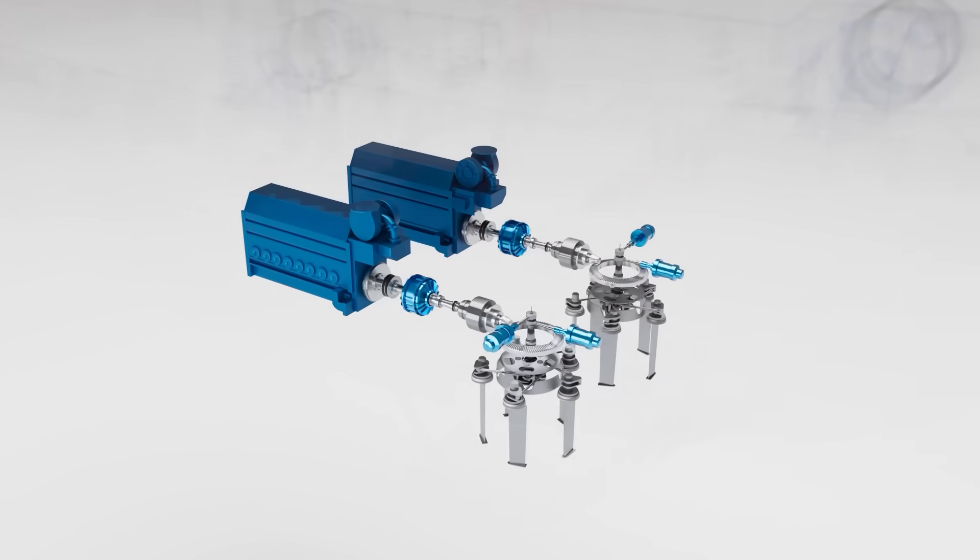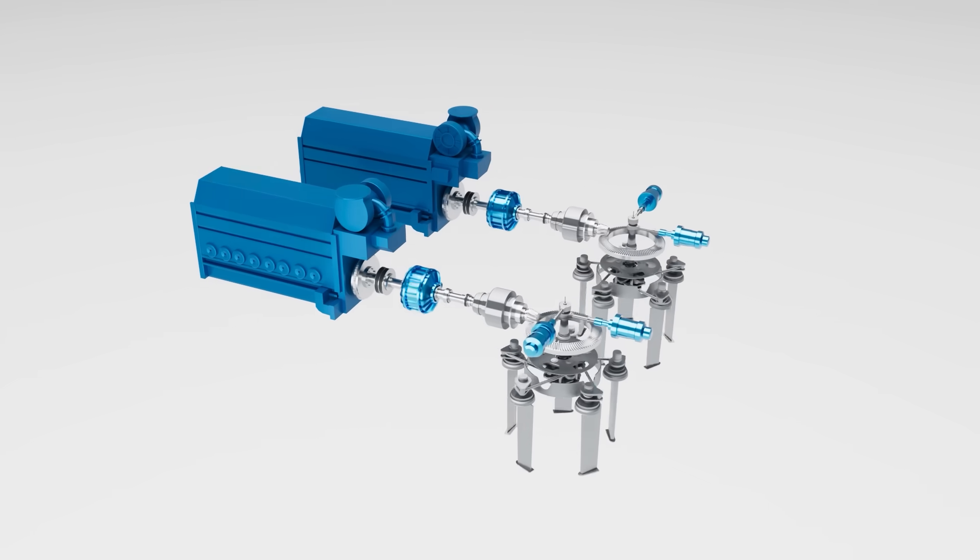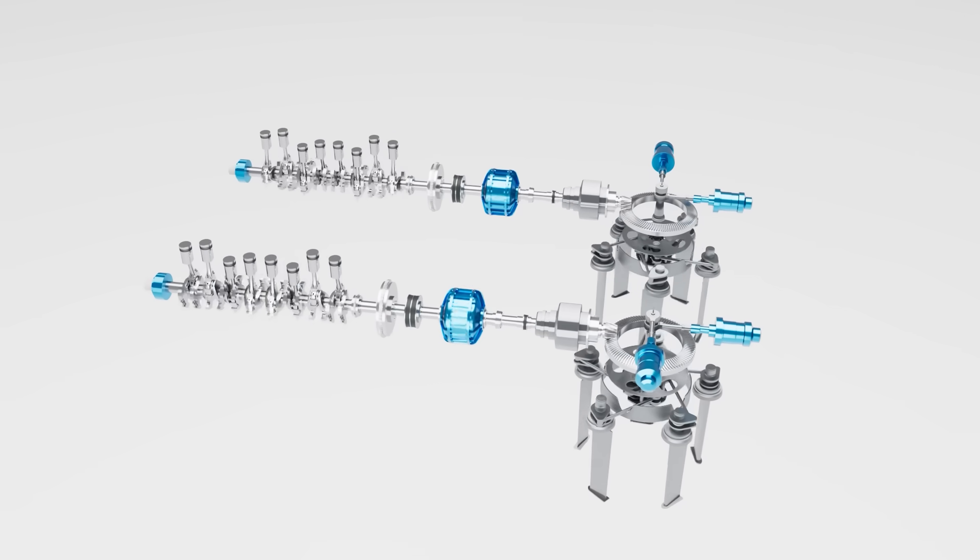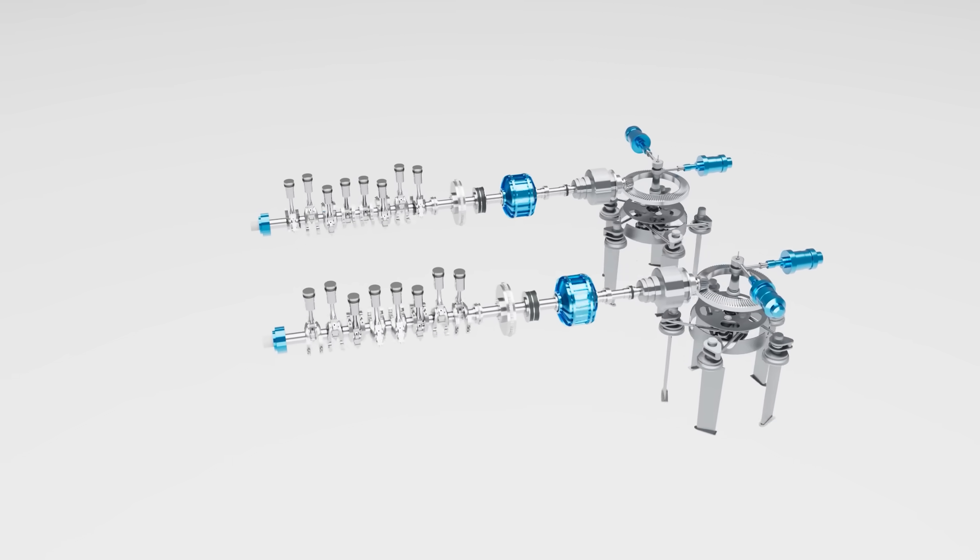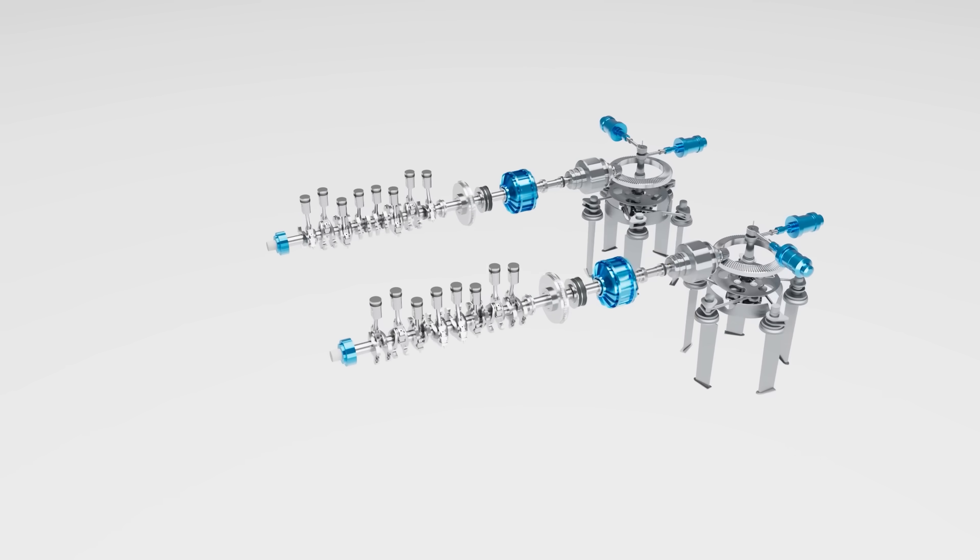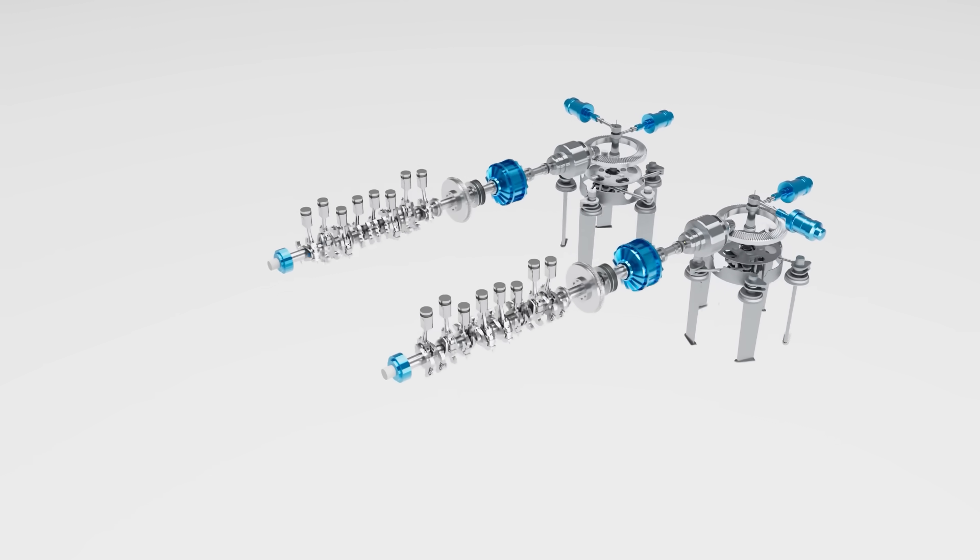This tug model uses two medium speed marine diesel engines. Each is a four-stroke engine with eight inline cylinders. They typically operate at 800 RPM, producing around 2700 kilowatts or 3700 horsepower.